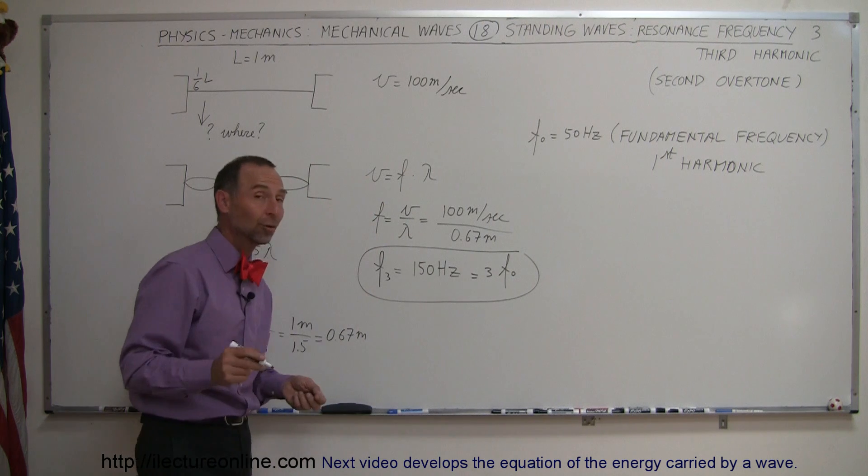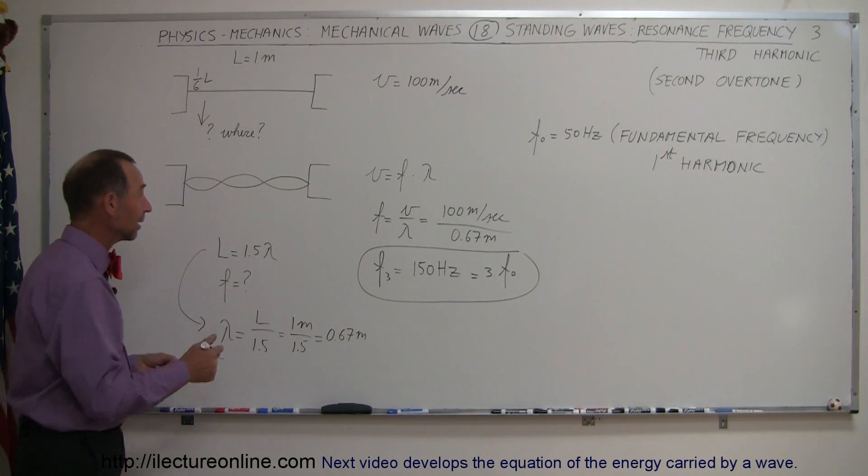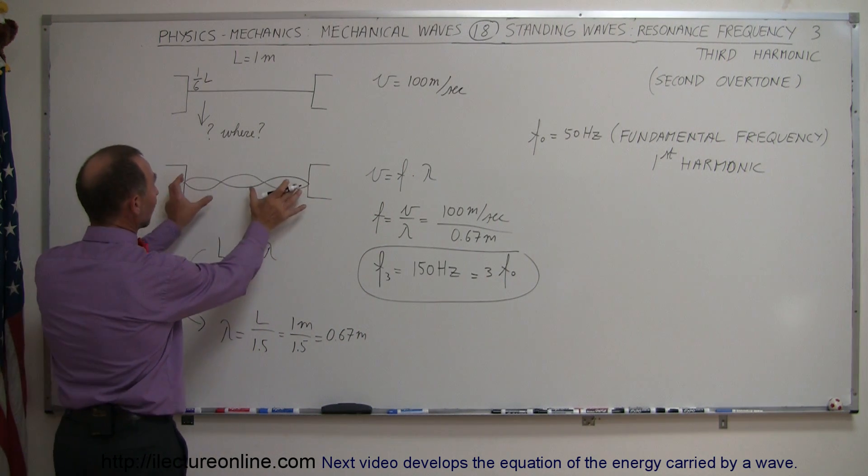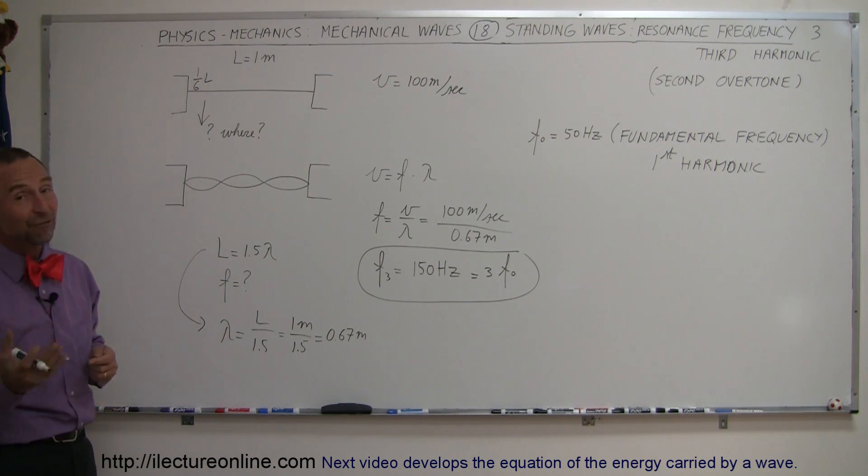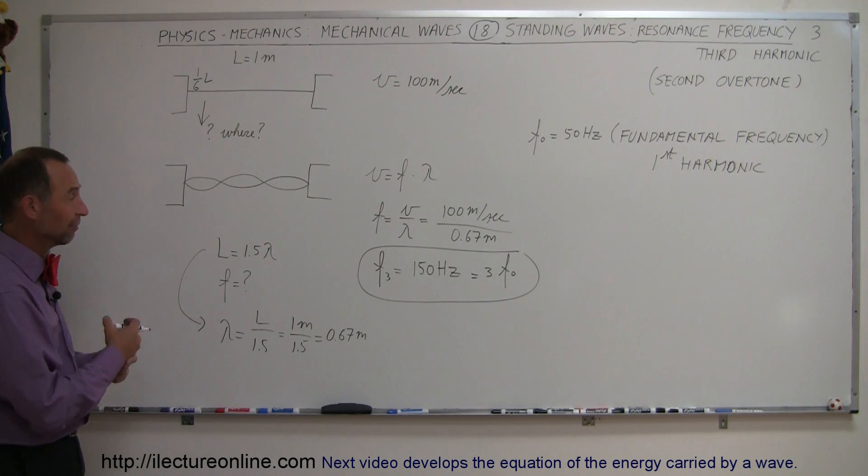So now that we have the pattern, if I asked you, what is the frequency of the fifth harmonic? If we have five of these, five of these lobes, or five of these half waves oscillating up and down, it would be five times the fundamental frequency, or five times the 50, or 250 hertz.